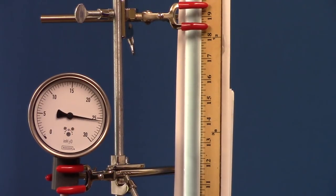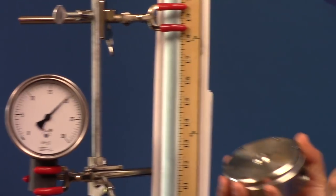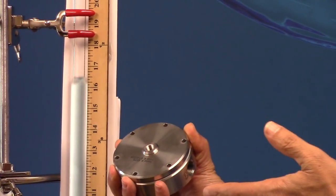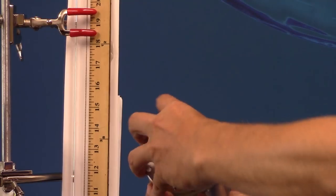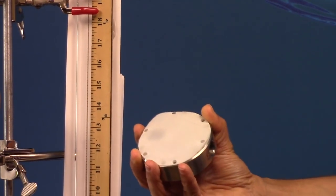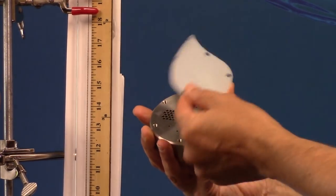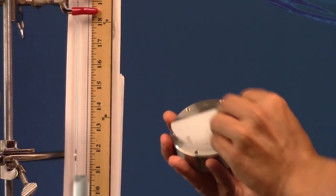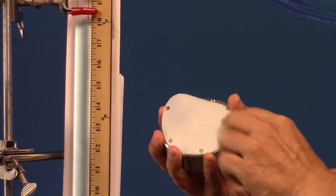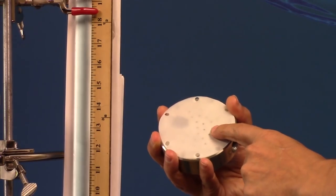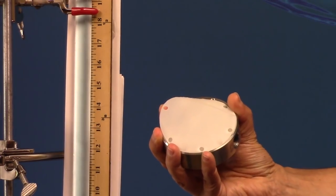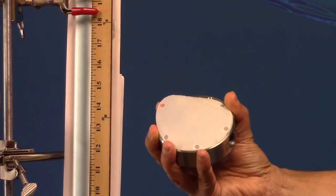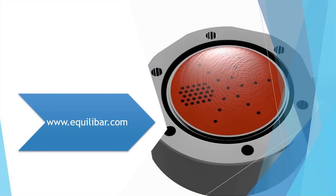The secret of how that Equilibar back pressure regulator works is the fact that there's only one moving part. That moving part is a thin, flexible membrane or diaphragm. Because the membrane is the only moving part and it is so flexible, there's no hysteresis, and it repeats the pilot pressure very precisely in a one-to-one relationship.